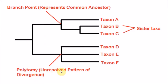A polytomy is an unresolved pattern of divergence. In a polytomy, you have a branch point where more than two organisms come out. This means scientists have not yet figured out the exact relationships, so they've grouped them together. When three taxons come out like this, it does not mean there's a resolved common ancestor — it just means there's an unresolved pattern of divergence. Sister taxa are two taxa that are related through a direct common ancestor, so two taxa sharing that direct common ancestor are sister taxa.